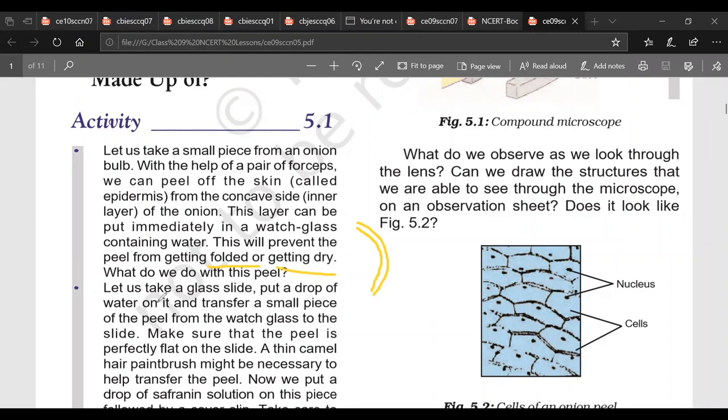And then we keep a glass slide. We put a drop of water and transfer this very small piece of peel. Generally we take a rectangle piece of peel that we are keeping on a glass slide in the center. And then we put a stain that is safranin stain.